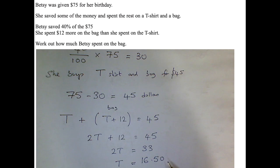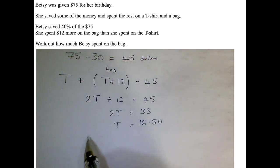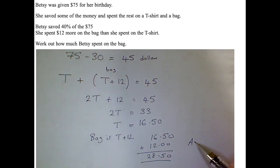Of course we're not asked to find the cost of a t-shirt, we want to find the cost of a bag. That's what the question asks for. And we know that the bag costs $12 more than the t-shirt. So let's write down the sum. So $16.50 plus another $12, add those two together and I should get the price of the bag. So it looks to me like she spent $28.50 on the bag.